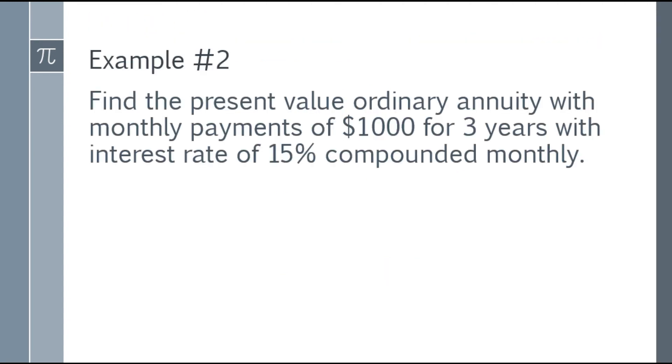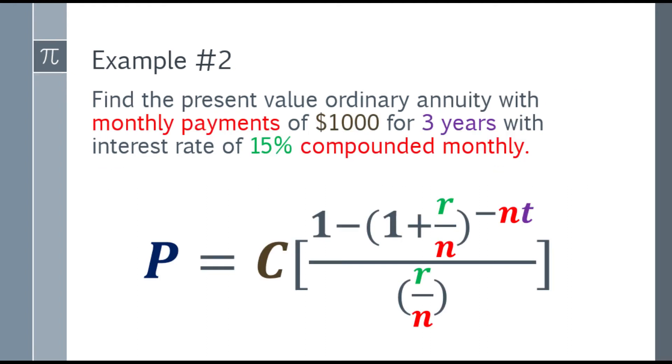Example number 2. Find the present value ordinary annuity with monthly payments of $1,000 for 3 years with interest rate of 15% compounded monthly. Same thing, we need to find the present value ordinary annuity. First step, write the formula.